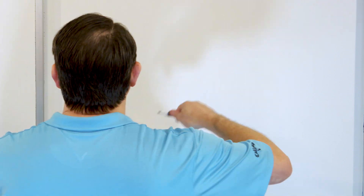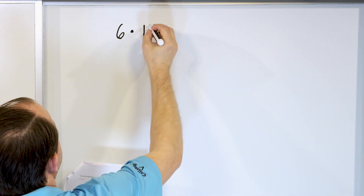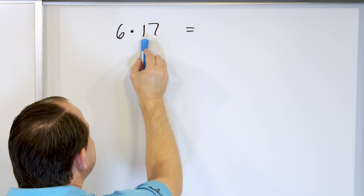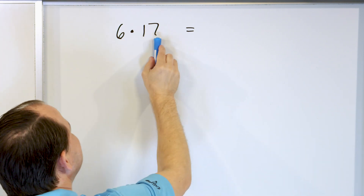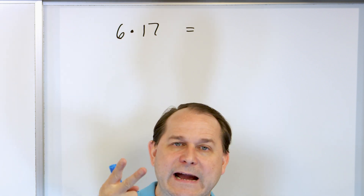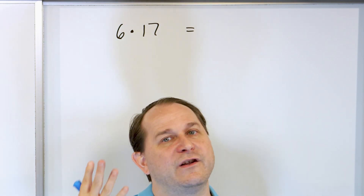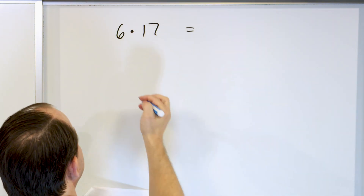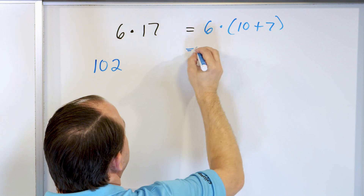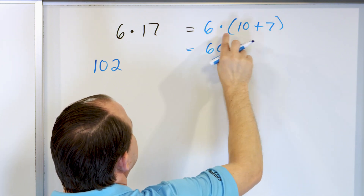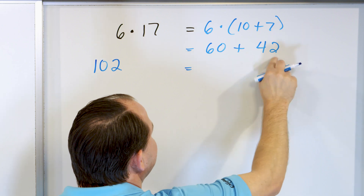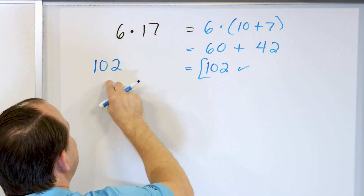Let's say we have 6 times 17. Let's see if we can do it in our mind. This 1 is not worth a 1 — it's really worth a 10. 6 times 10 is 60. Keep that in your mind: 60. Then 6 times 7 is 42. So we have 60 and then 42. Let's go up from 60: 70, 80, 90, 100, and then 2 — because we had to add 42. So we got 102. Let's check: 6 times, this is going to be 10 plus 7. Then 6 times 10 is 60, plus 6 times 7 is 42. Counting up: 70, 80, 90, 100, 2 — the answer is 102, and that's what we got in our mind.